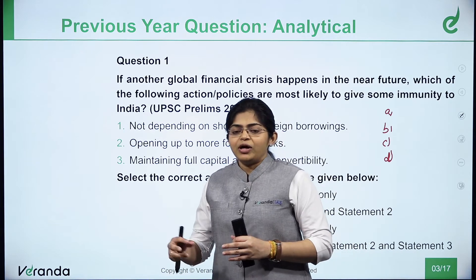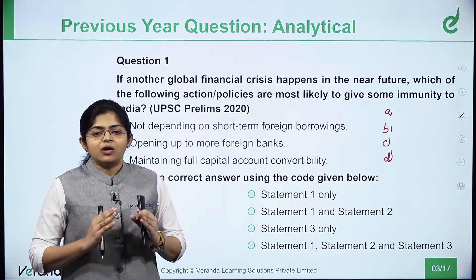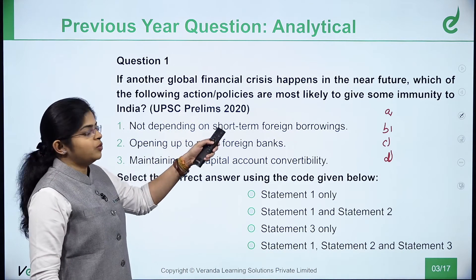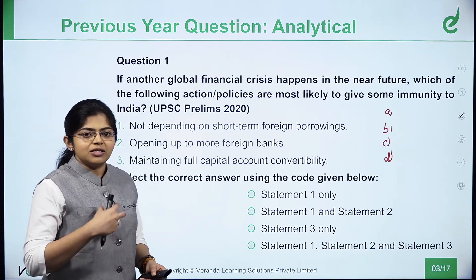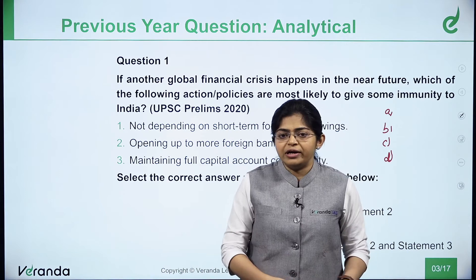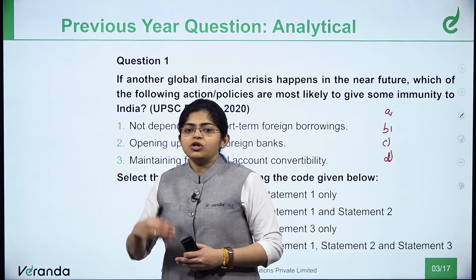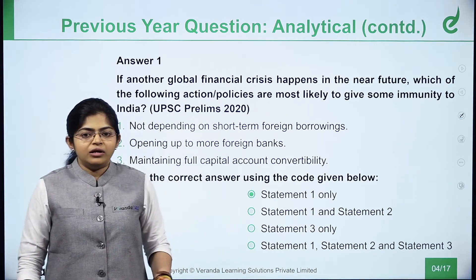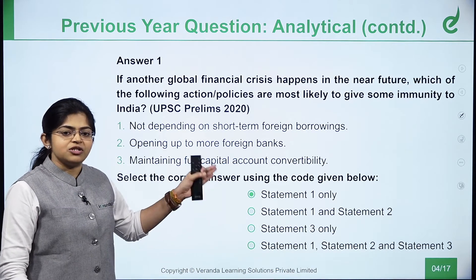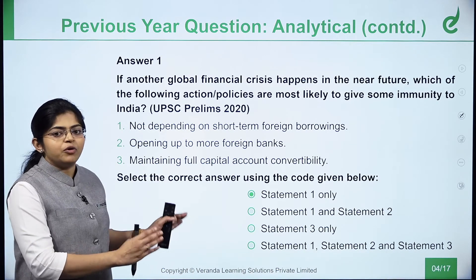I have chosen this question because you need to understand the applicability aspect of economics. Economy is not like other subjects where you study a concept and a direct factual question is asked. Economy is completely application-oriented. They have asked: next time if a global crisis happens, what steps would you take? So when studying, it's not just about knowing the 2008 crisis happened — you need to learn from it and think about how to tackle a crisis in the future. You need to be futuristic while studying.